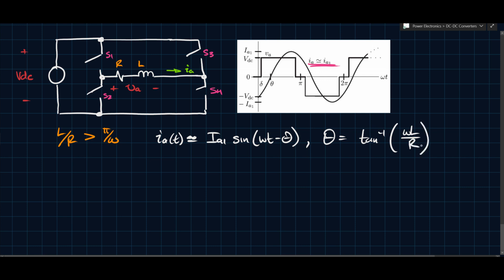This shows that the L over R, or omega L over R, governs how much of a phase shift there will be between the voltage and the current, essentially what we're looking at in this case.